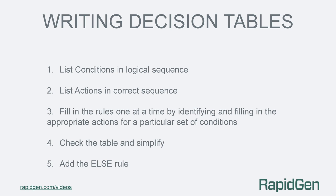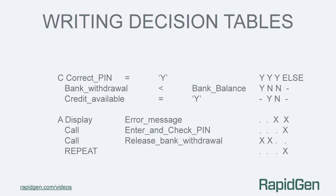The final instruction is to add an else rule. This is good practice. The else rule acts as an exception handler, and the more complex your decision tables become the more likely you won't have covered all the rules. So define an else rule to capture those cases. In our example we have replaced the N rule for incorrect pin with the else rule.